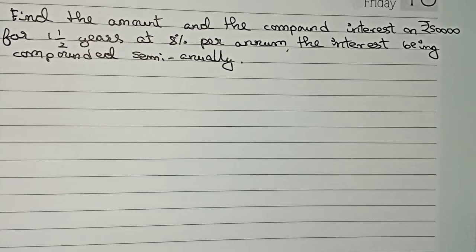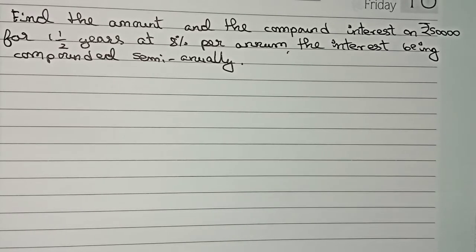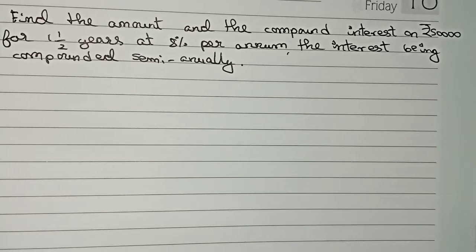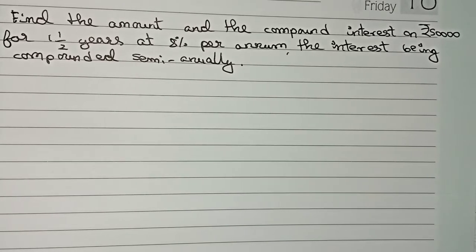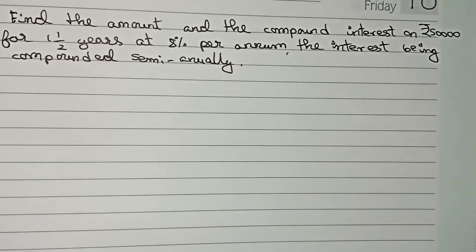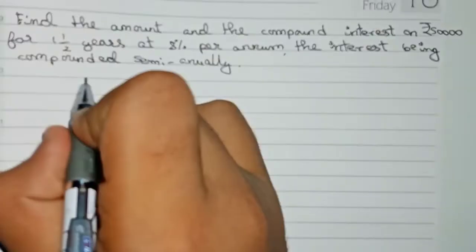Hello guys, welcome to this video. In this video, the question is: find the amount and the compound interest on rupees fifty thousand for one and a half years at eight percent per annum, the interest being compounded semi-annually. As always, I will solve this question using the simple interest formula.